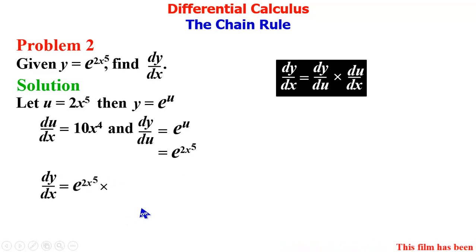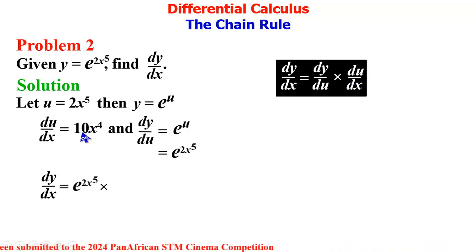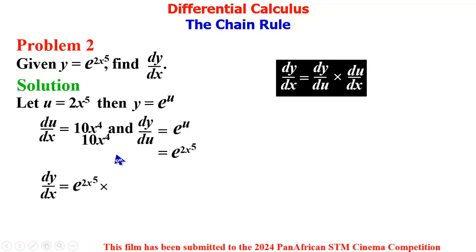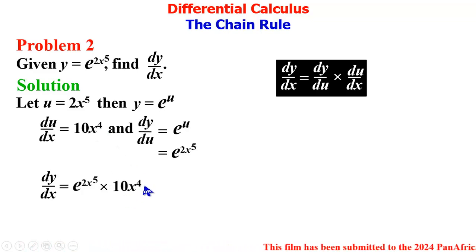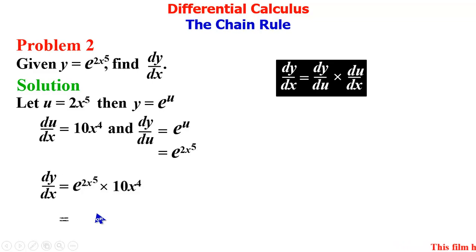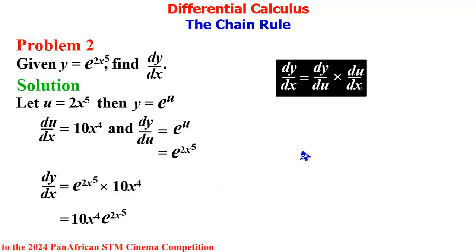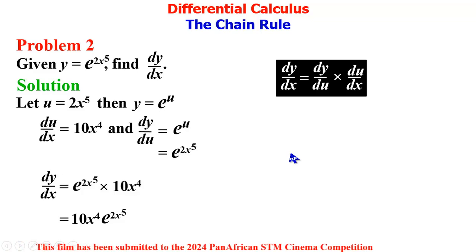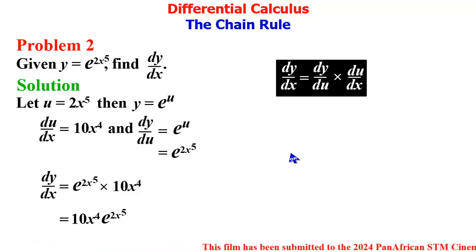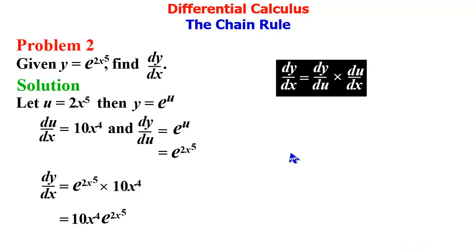We multiply by du/dx which is 10x⁴. Simplifying, we have dy/dx = 10x⁴ · e^(2x⁵). That's the solution to Problem 2. This is where we are ending this video — I hope you enjoyed it. Thank you for watching, like, share, and please leave your observations in the comment section. Goodbye.